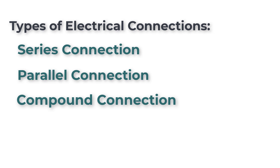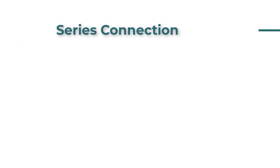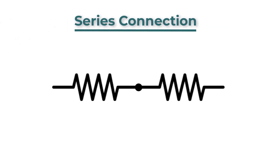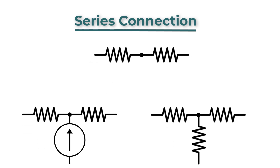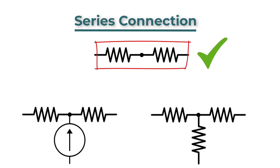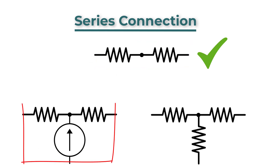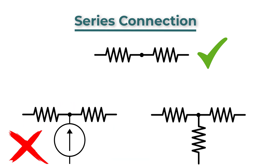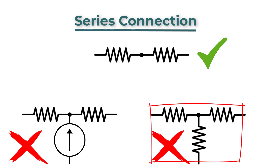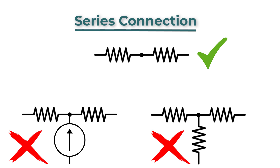First of all, we have to know what series, parallel, and compound connections are. We will have two series electrical elements if they have only one point in common, and this common point must not be connected to any other element. In these examples, this is a series connection. This isn't a series connection because we have a current-carrying element here. And we can't consider this as a series connection because the common point is connected to another element.